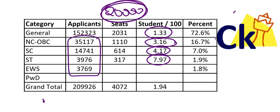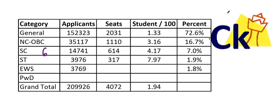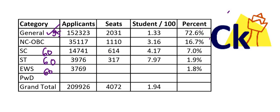Just clear the cutoff — you are going to get the call from IIMs. For example, if a particular IIM has a 60 percentile cutoff, just get 60 percentile and you will get the call. For general category, your overall score has to be 95 percentile plus to get the IIM call. So look at that number and don't get scared — this is just to tell you the facts about the conversion ratio.